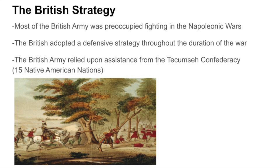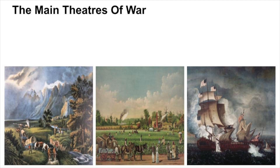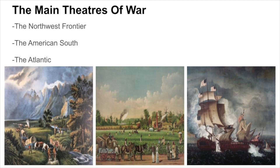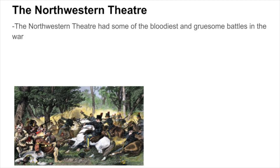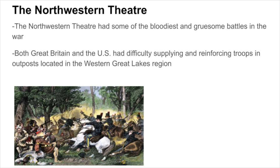The major combat in the War of 1812 happened in three main areas: the Northwest Frontier, the American South, and the Atlantic. These places are now called the three main theaters of the War of 1812. The Northwestern Theater was known for having some of the bloodiest and most gruesome battles in the War of 1812, with both the British and the Americans having difficulty supplying and reinforcing troops in outposts located in the Western Great Lakes region.